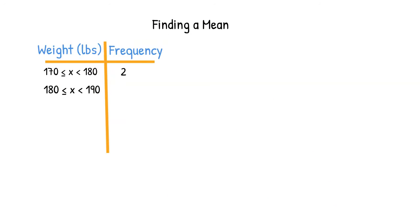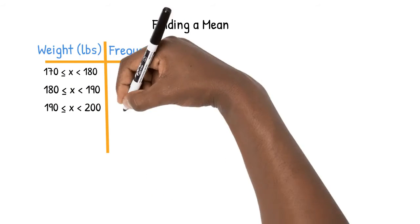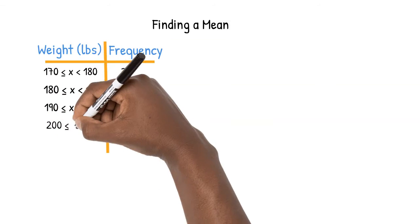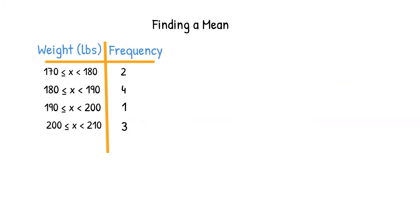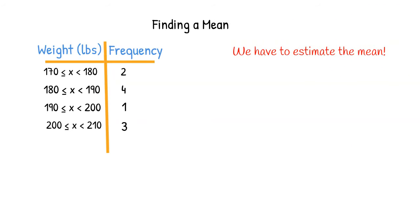Between 180 and 190 pounds we have four people. In the next category we have one person, and in the final category we have three people. We don't know how to find the exact weight of the people in each category, so we have to estimate the mean through a series of smaller estimations.